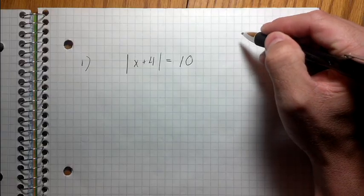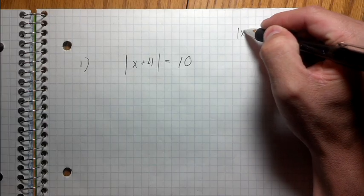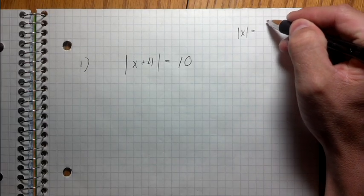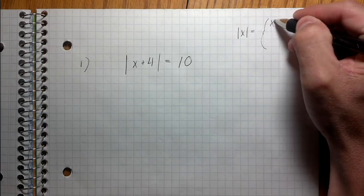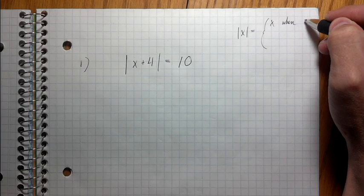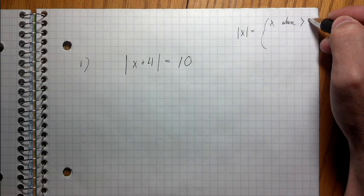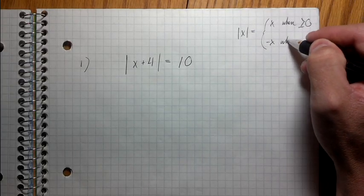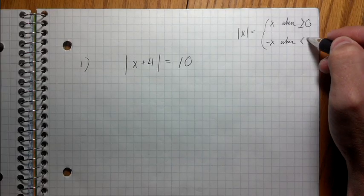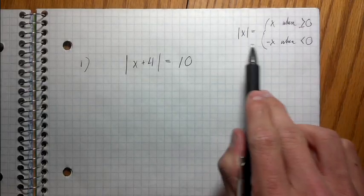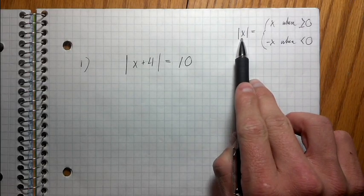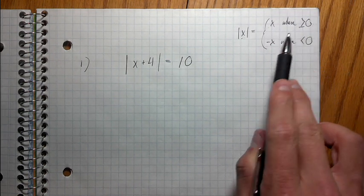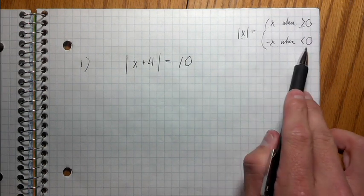Okay, so the formal definition of absolute value is this. Absolute value of x equals x when x is greater than or equal to zero, and it equals negative x when x is less than zero. So this is just kind of a fancy way of saying when in the positive realm, x stays positive. And in the negative realm, you have to switch the sign to make x positive.